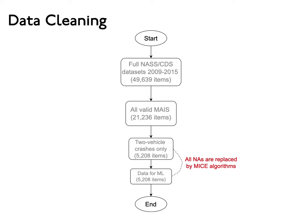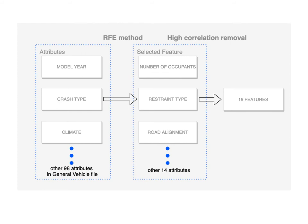Because the performance of machine learning models highly relies on the quality of datasets, the first important step is to prepare the data. We use NAS datasets, also applied in the last video. For this study, we only consider two-vehicle crashes and then remove all records with NAS in the dependent variable. We replace NAS in other variables by a method called multiple imputation by chained equations. Finally, we obtained 5,208 items in total. The next step is to reserve necessary independent variables, using recursive feature elimination and removing variables with higher correlation. This table summarizes the features and their descriptions.